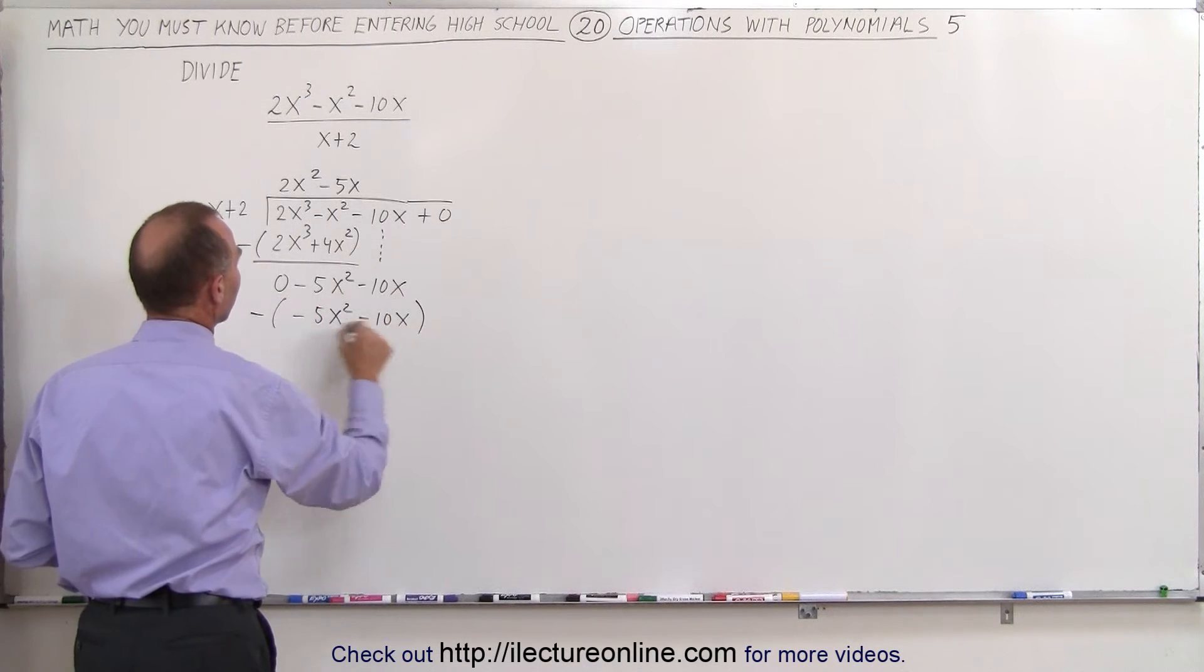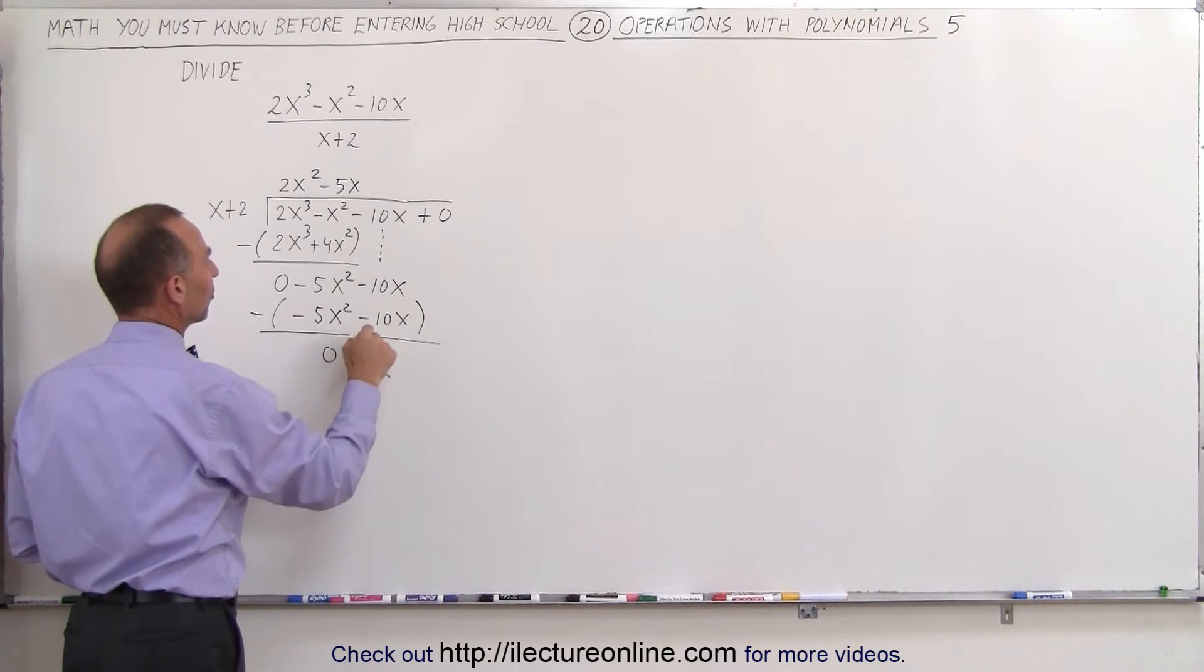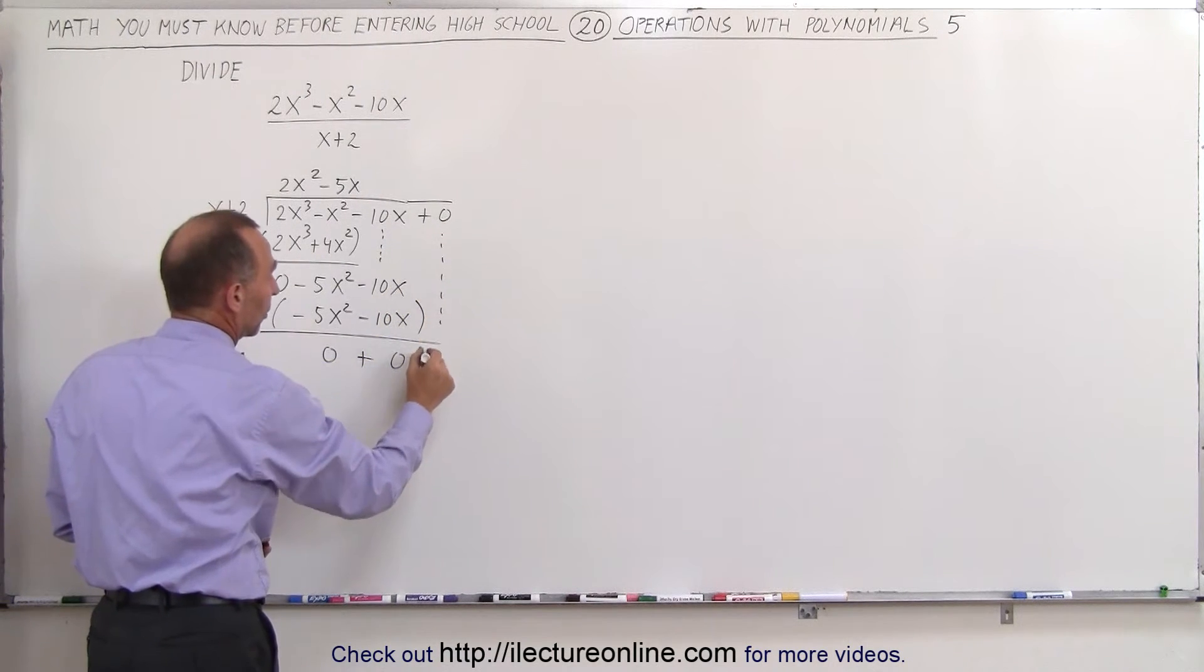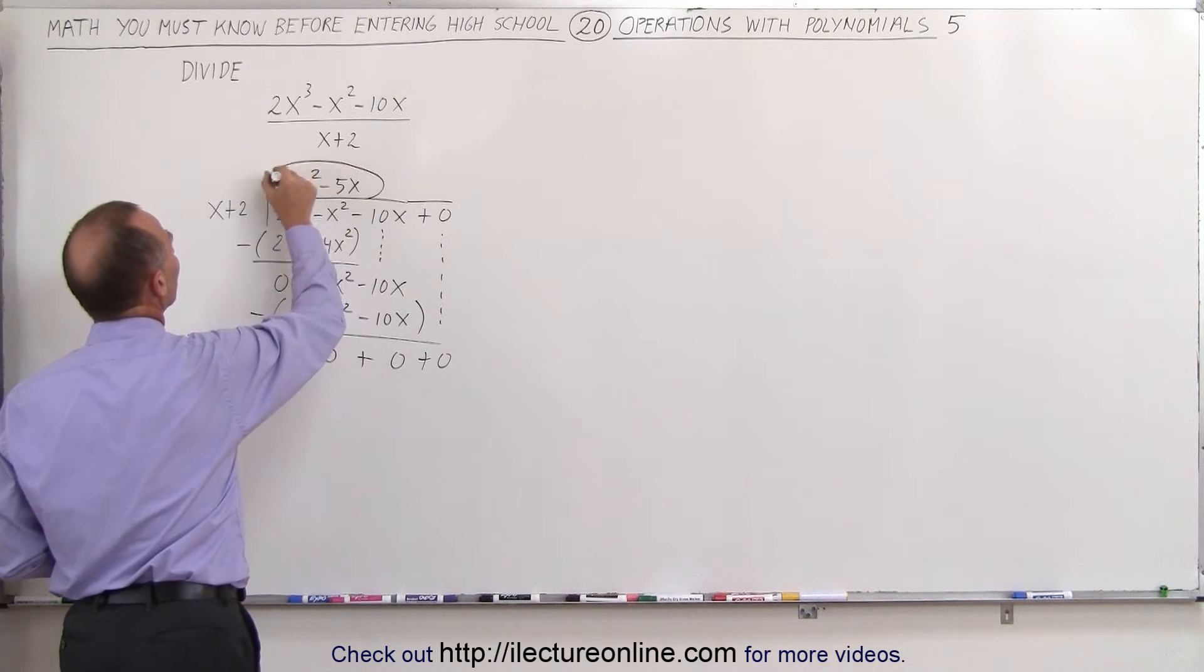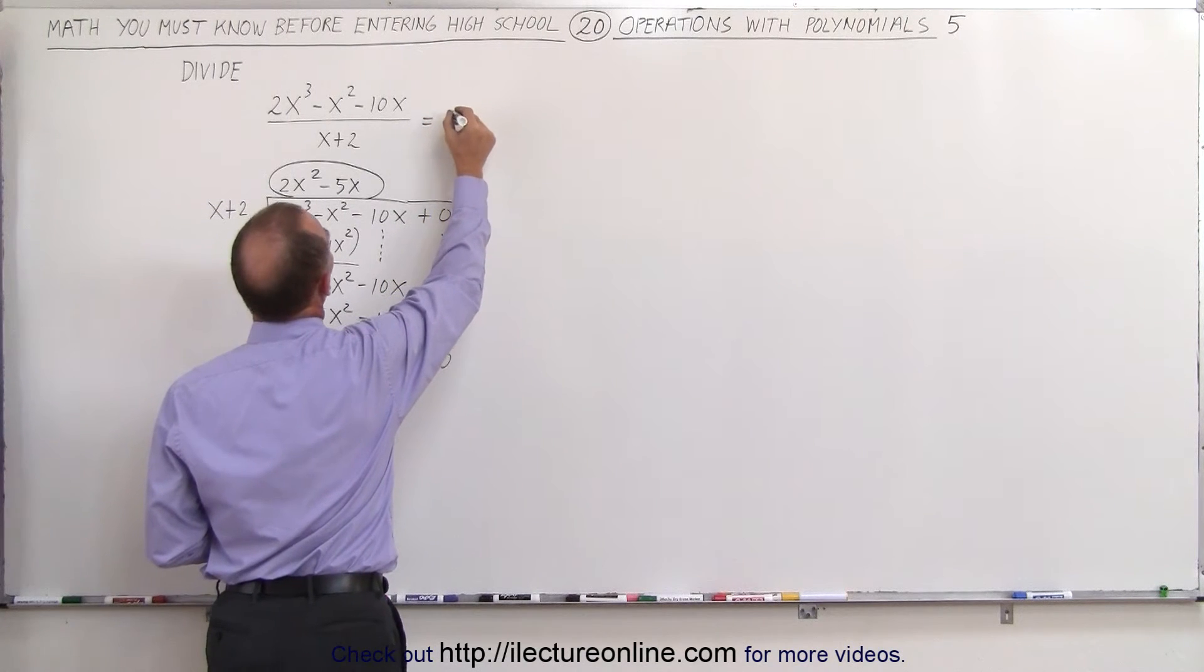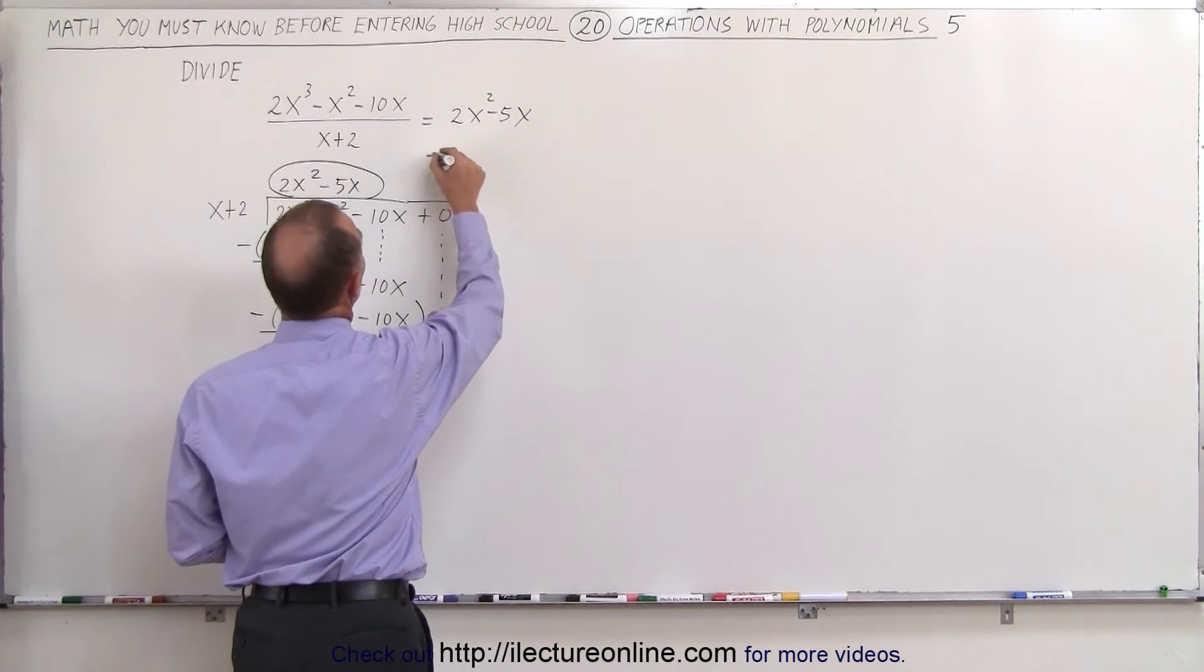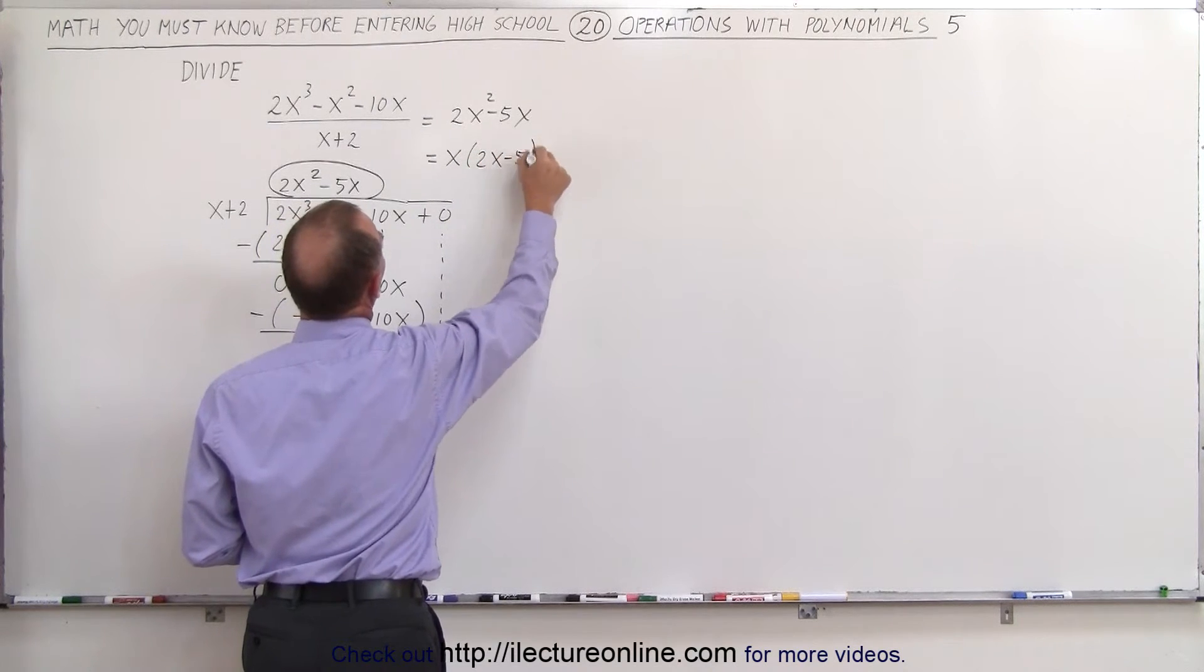When we subtract this from what's right above, we get 0 which means 0 remainder. When I drop down the next number which is also plus 0, we have a 0 remainder, which means that this is the result of our division. We can then say that this can be written as 2x² - 5x, or if you want to factor out a common factor you can say this is x times (2x - 5).